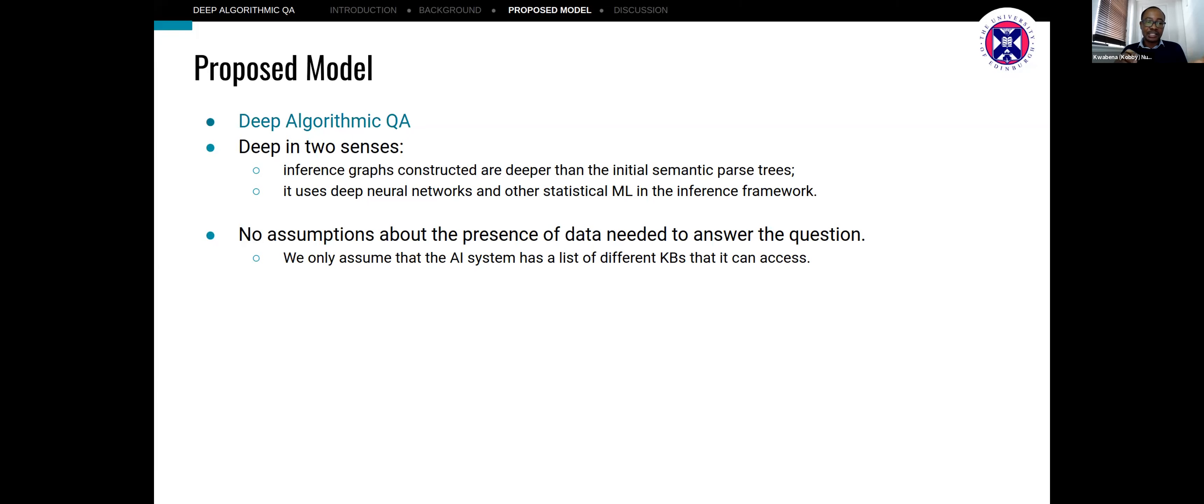Our model is deep in two senses. One is the fact that the inference graphs that are constructed are deeper than the initial semantic parse trees that are generated. And then also the fact that we have access to neural networks that are available as functions within the model. We make no assumptions about the presence or absence of data. We purely assume that the AI system has access to a list of knowledge sources that it can access data from.